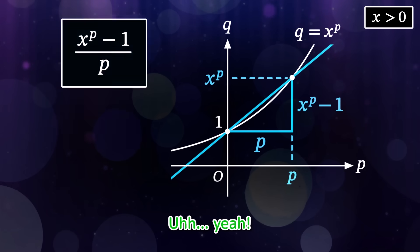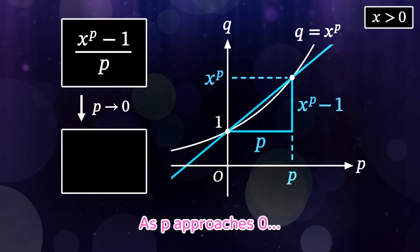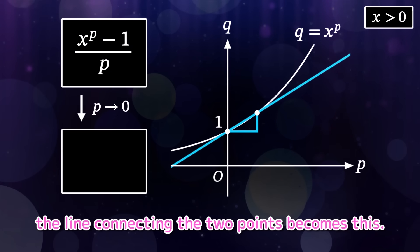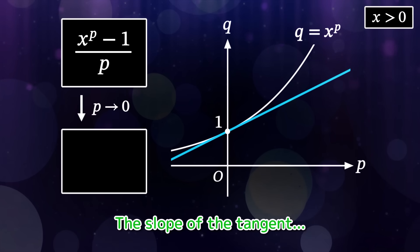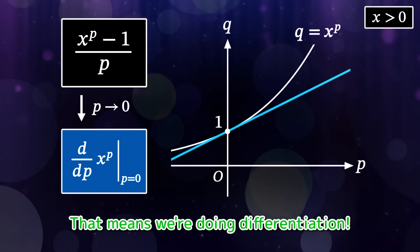The graph intersects the q-axis at q equals 1, because x to the 0 equals 1. If we move right by p from the origin, q becomes x to the p. Okay, let's consider the line connecting those two points. The change in p is p, and the change in q is x to the p minus 1. So the expression represents the slope of that line. Uh, yeah. As p approaches 0, the line connecting the two points becomes this. So we are actually finding the slope of the tangent at p equals 0. The slope of the tangent? That means we're doing differentiation.